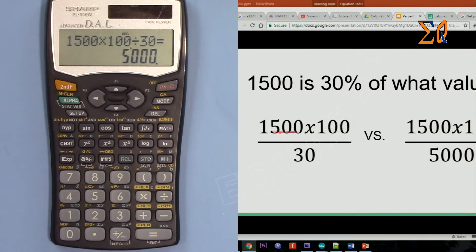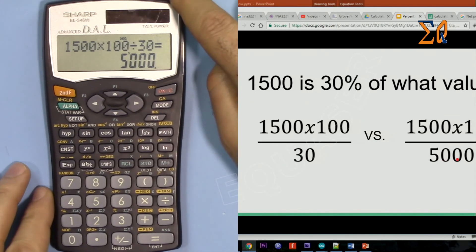Now pay attention to this. These two non-convention ways both of them will have 1500 times 100, so 100 is always at the top and then the denominator we will have 30 or 5000. That's it, thank you for watching.